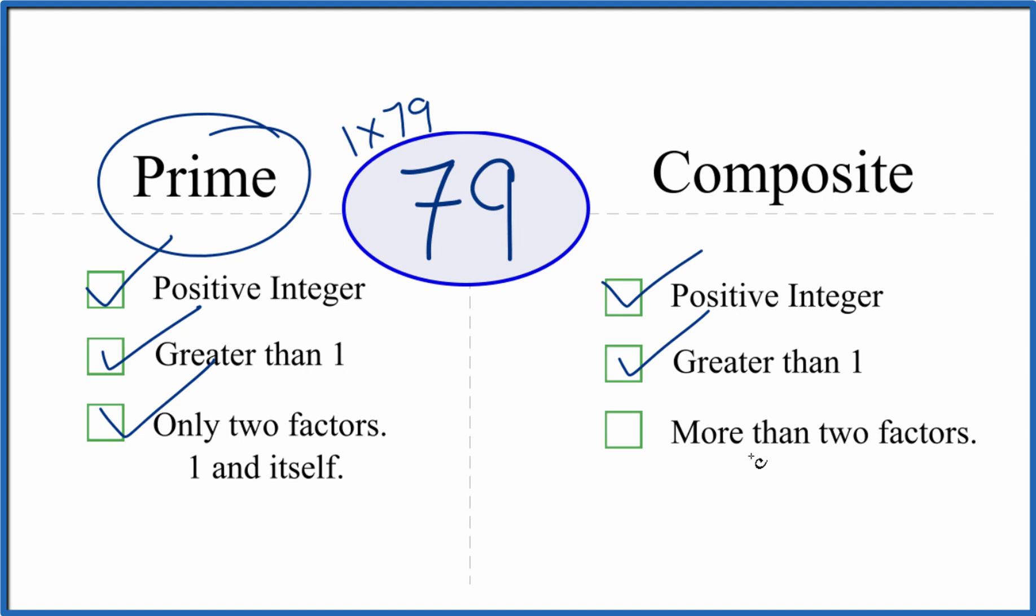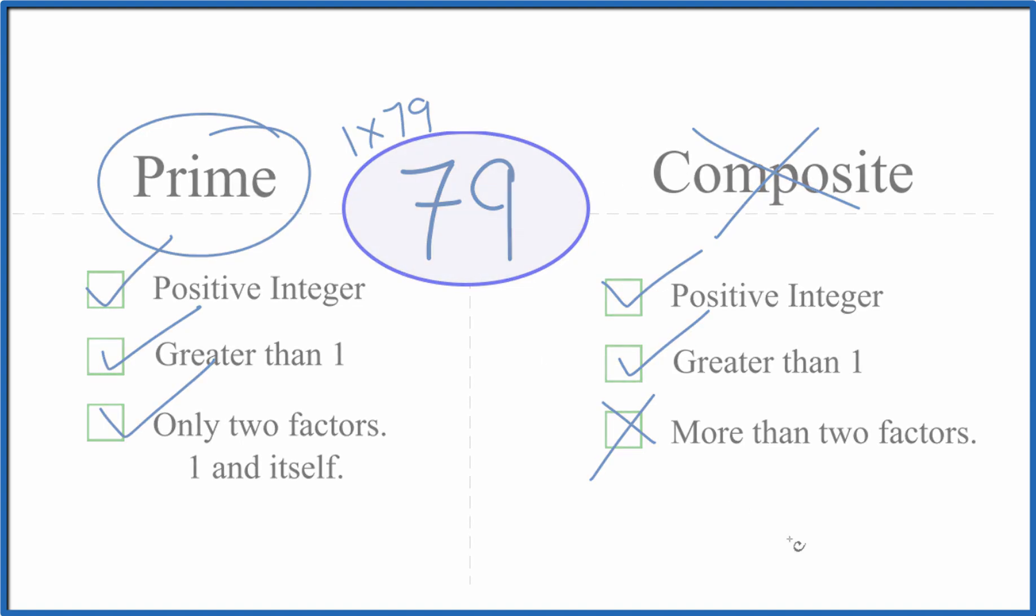Are there more than two factors? There are only two factors, so there are not more than two factors. It's not composite. So that's it. This is Dr. V, looking at whether 79 is prime or composite. It's a prime number. Thanks for watching.